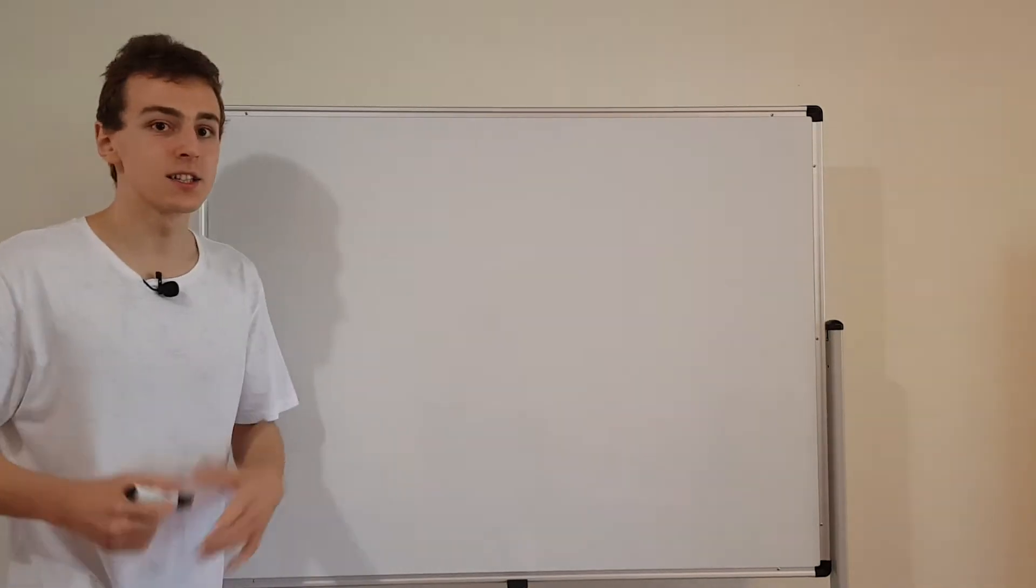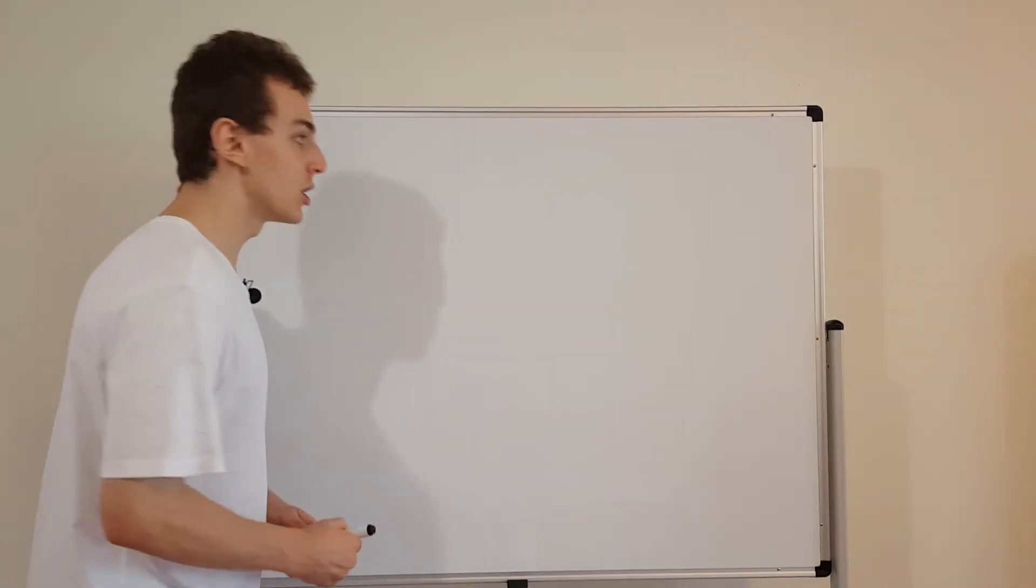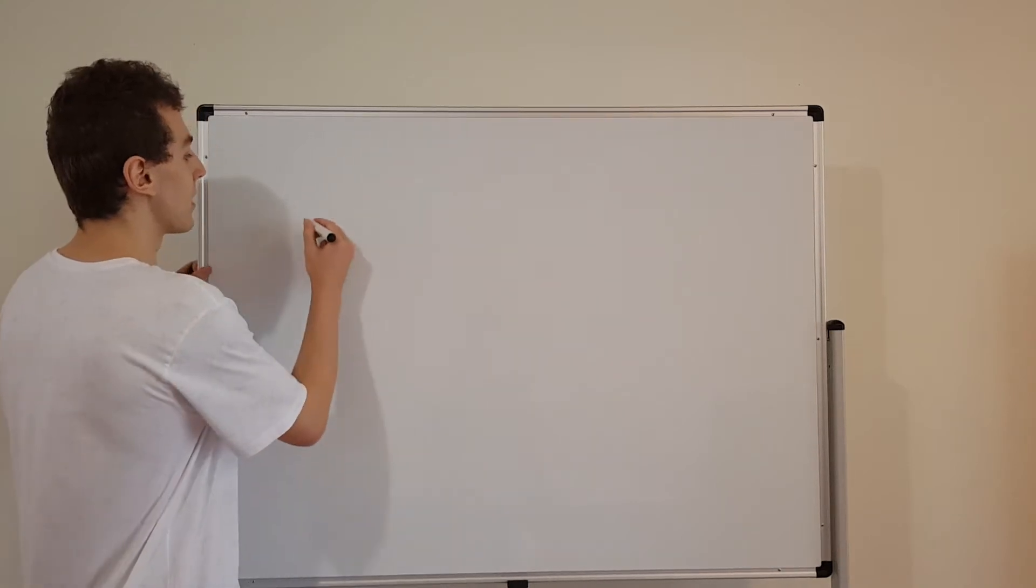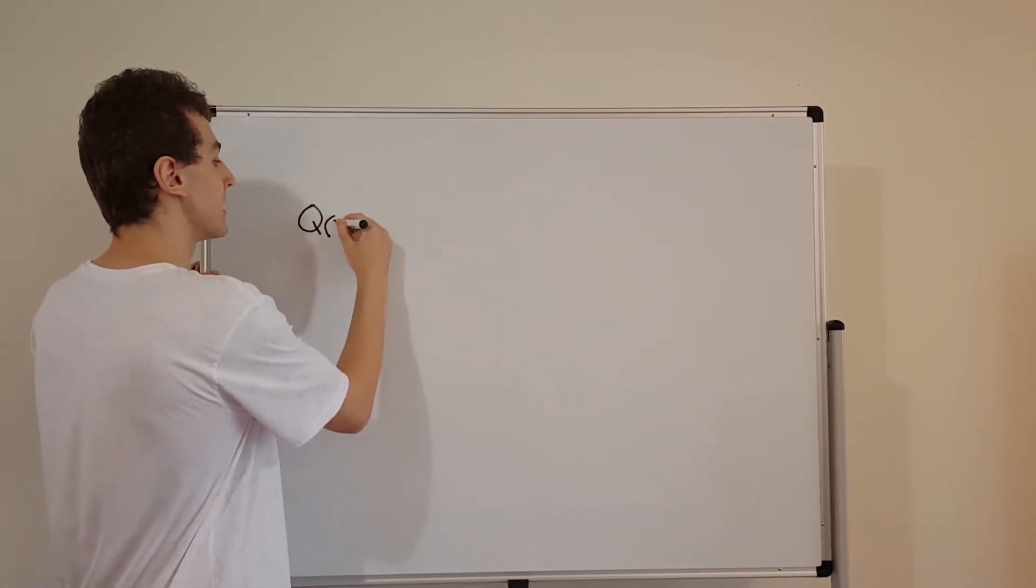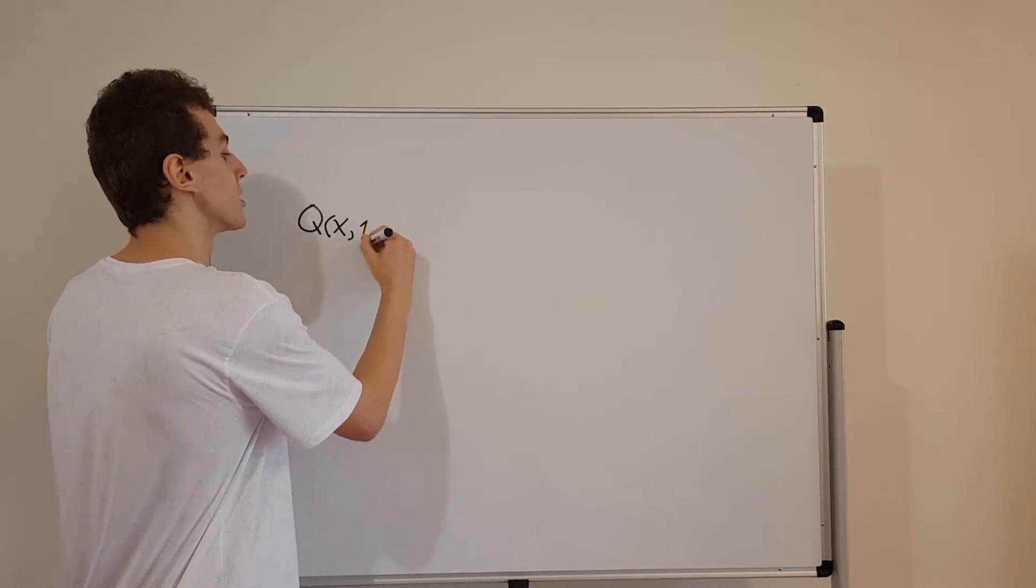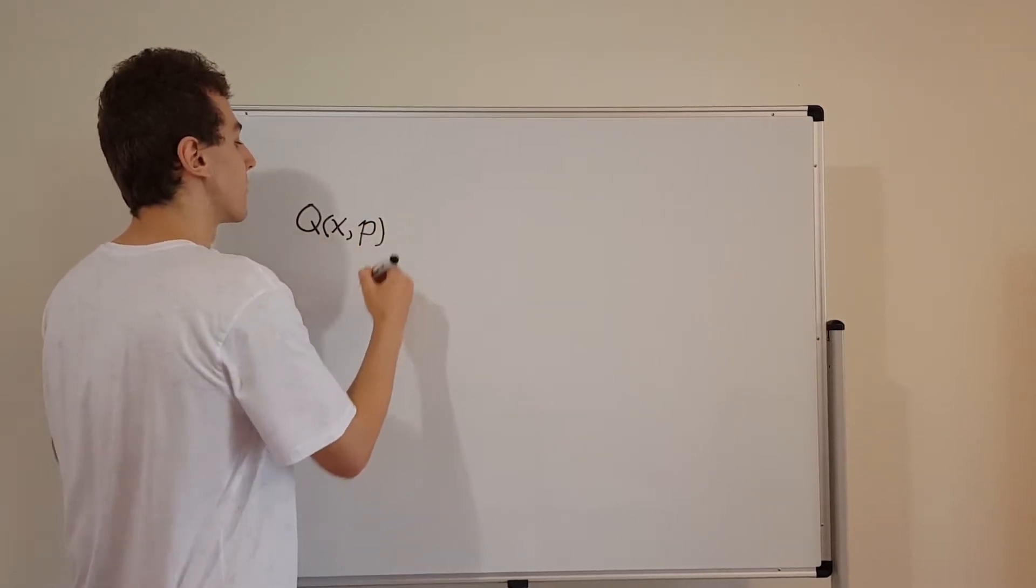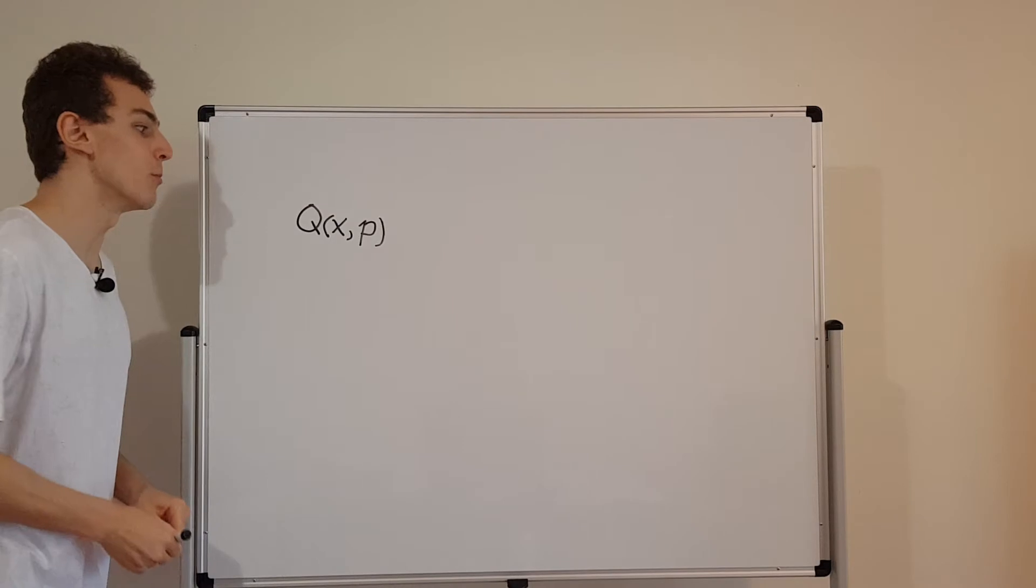So we're going to take a quantity. Let's call that quantity Q. And Q is going to depend on both X and P. So we have Q, that's our quantity. It depends on X and on P. So we can express this quantity as a function of position and momentum.